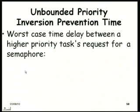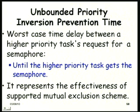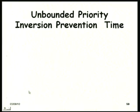Unbounded priority inversion prevention time: whenever a high-priority task requests a semaphore or shared resource, what is the worst-case time delay? The worst case occurs when a low-priority task holds the resource and intermediate-priority tasks prevent the low-priority task from completing. Unbounded priority inversion will occur and take a long time. This parameter represents the effectiveness of the supported mutual exclusion scheme — whether it is a priority inheritance mechanism, a ceiling protocol, or locker protocol — or whether the OS does nothing specific when a higher-priority task requests a held resource.